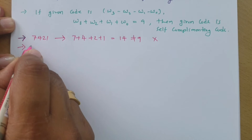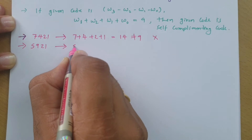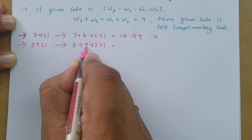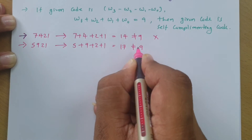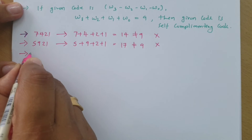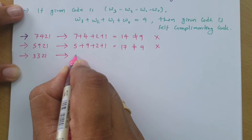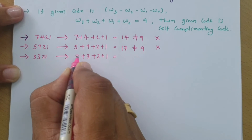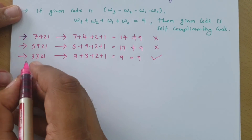Let us have one more example: the 5921 code. In the 5921 code, if you do addition of all weightages — 5 plus 9 plus 2 plus 1 — that gives 17, which is not equal to 9, so this is not a self-complementing code either. Next, for the 3321 code, adding the weightages: 3 plus 3 plus 2 plus 1 equals 9. It is equal to 9, so we can say this is a self-complementing code.